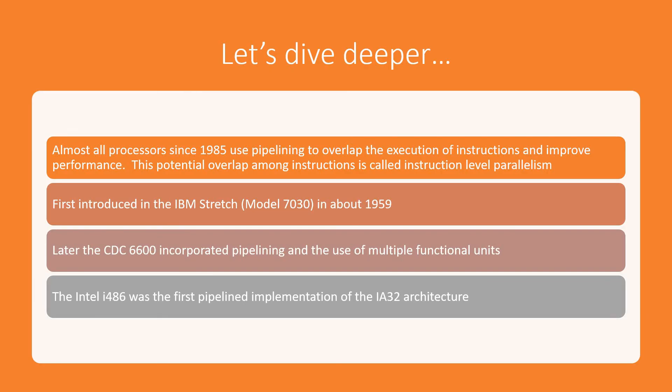The Intel i486 was the first pipelined implementation of the i386 architecture. We have been using pipelining for almost 40 years, and it is still evolving. There are many ongoing developments in this field, which is why this topic continues to be studied.